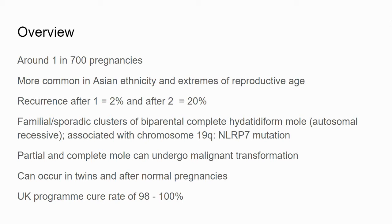The reason we're worried and interested in these is that they can undergo malignant transformation. It's a rare occurrence, but it can happen in a twin pregnancy where you get one normal pregnancy and a coexisting mole — estimated at around 1 in 50,000 to 1 in 100,000. They can even occur after normal pregnancies, such as placental site tumours. We have a good UK programme cure rate of between 98 and 100%, so it's important to identify and manage these pregnancies.